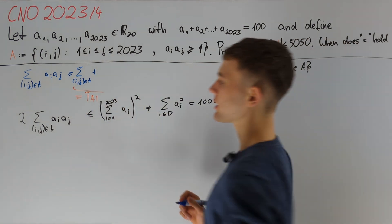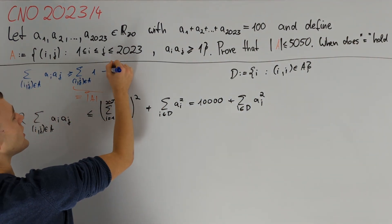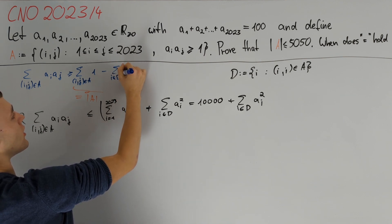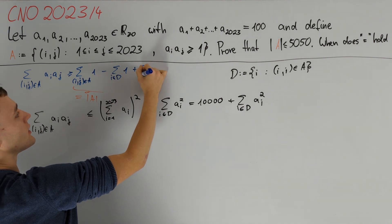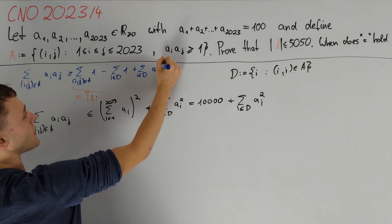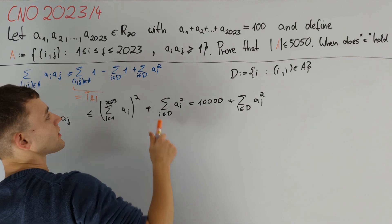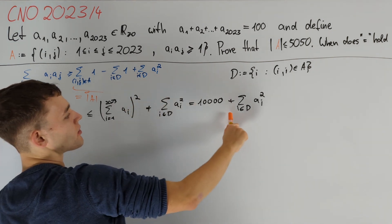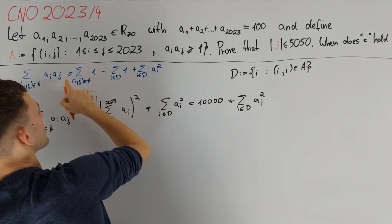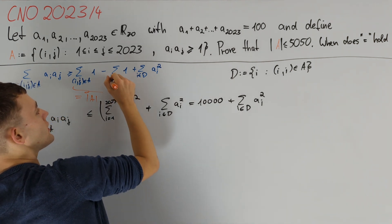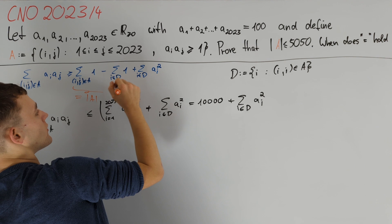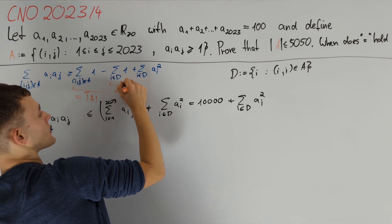In particular we make it sharp on the diagonal by subtracting the sum of i in d of 1 and then adding the sum of i in d of a_i squared again. We recognize that we now have this same problematic sum on the other side of our inequality, which is good for us, and moreover this sum of i in d of 1 is again equal to the magnitude of d.